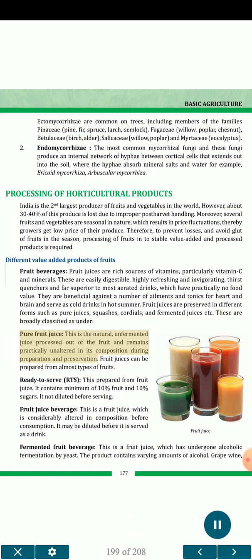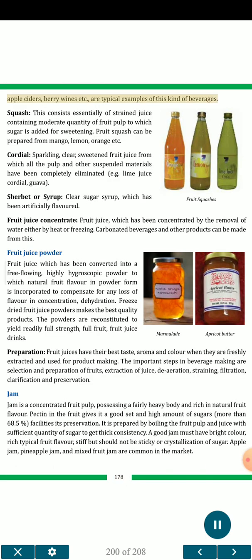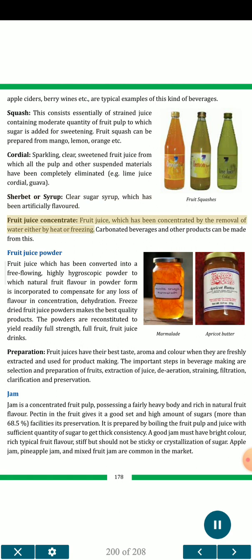Pure fruit juice is the natural, unfermented juice processed from the fruit, remaining practically unaltered in composition. Ready-to-serve (RTS) contains a minimum of 10% fruit and 10% sugars. Fruit juice beverage is considerably altered in composition before consumption. Fermented fruit beverage is fruit juice which has undergone alcoholic fermentation by yeast, containing varying amounts of alcohol — apple ciders, berry wines etc. are typical examples. Squash consists of strained juice with moderate fruit pulp, with added sugar — prepared from mango, lemon, orange etc. Cordial is a sparkling, clear, sweetened fruit juice with all pulp eliminated, e.g., lime juice cordial. Sherbet or syrup is a clear sugar syrup which has been artificially flavored. Fruit juice concentrate is juice concentrated by removal of water by heat or freezing. Fruit juice powder is juice converted into a free-flowing, highly hygroscopic powder; freeze-dried fruit juice powders make the best quality products.